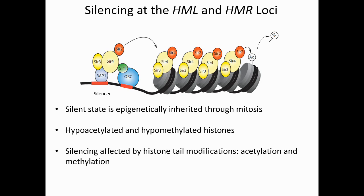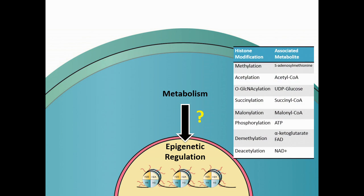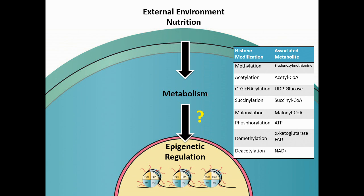What I'm particularly interested in is understanding how changes in the environment of a cell can actually influence the regulation of silencing. Certain changes, particularly those that influence metabolism, could convey information to the genome and epigenome through metabolism. The connection between metabolism and epigenetic regulation—at least one of the more obvious connections—is that for every known histone modification, there's a metabolite associated with the enzymatic reaction that either adds or removes the histone mark. I'm interested in understanding how changes in the external environment, particularly through changes in nutrition or metabolic diseases, could impact epigenetic regulation.